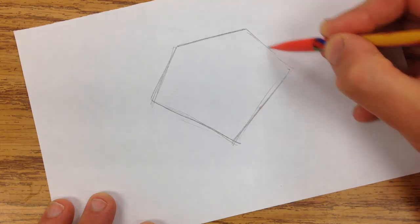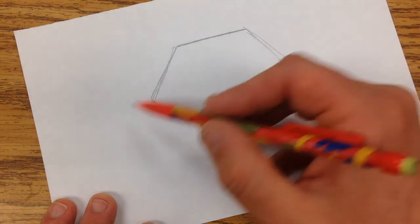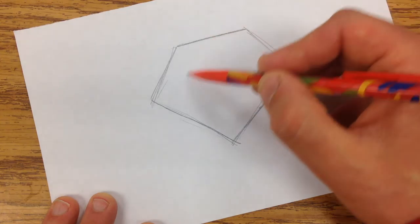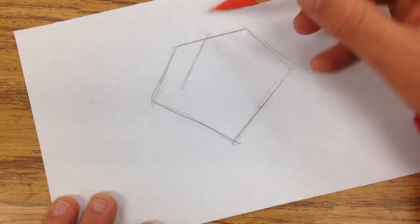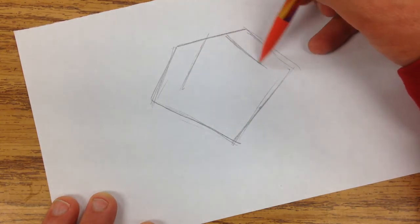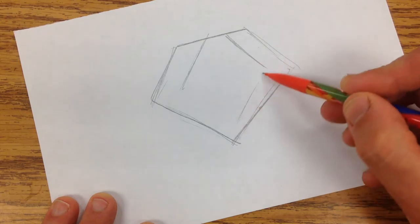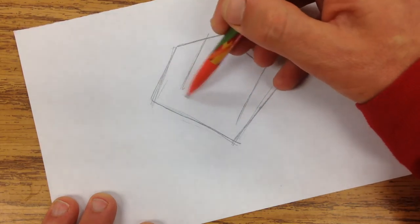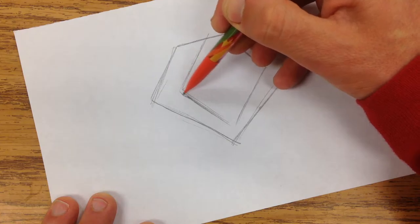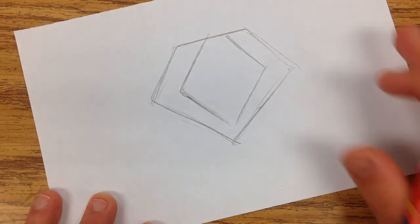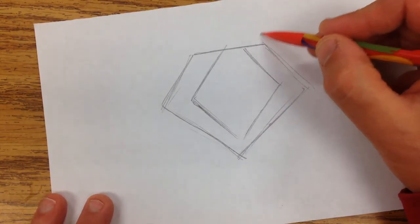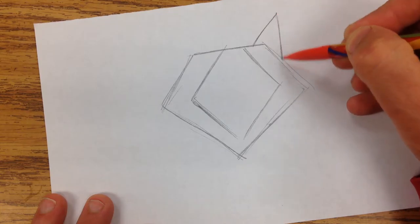Then I'm going to draw some interior shapes here. I'm drawing really lightly so if I want to change I can erase it easily. And then we'll add the ears on top, just these triangular shapes here.